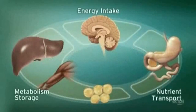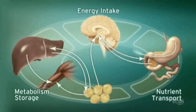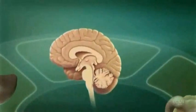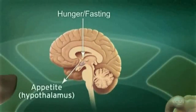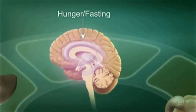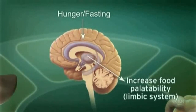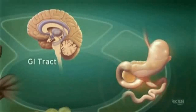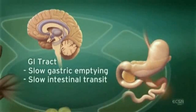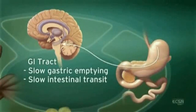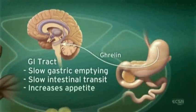Endocannabinoid system activity in the central nervous system regulates food intake. ECS stimulation by hunger and fasting signals stimulates appetite and increases the palatability of food. Endocannabinoids slow gastric emptying and GI transit and appear to stimulate secretion of ghrelin, a neuropeptide that increases appetite and food intake.